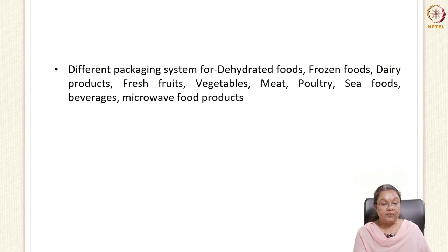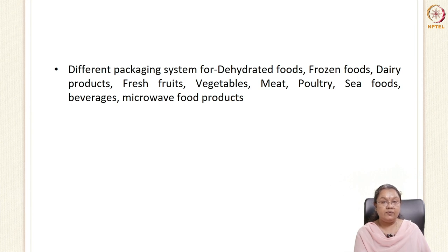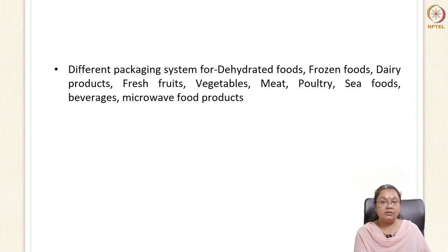Coming to the next topic, we have different packaging systems for dehydrated foods, frozen foods, dairy foods, fresh fruits and vegetables, meat and animal-based products, and beverages. We cannot have a single type of packaging material for all kinds of food — it differs from product to product. When choosing a packaging material, the main criteria include the content going inside, expected shelf life, the form in which it should reach the consumer, cost of the product, environmental conditions, and how it will be transported.